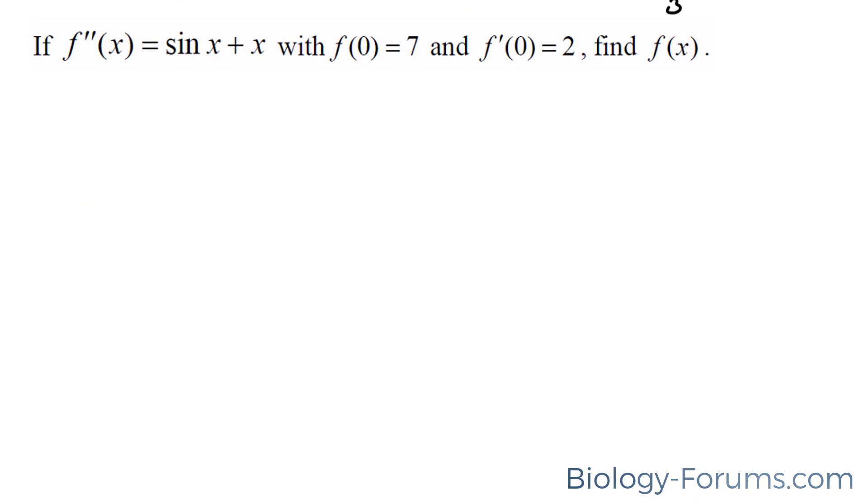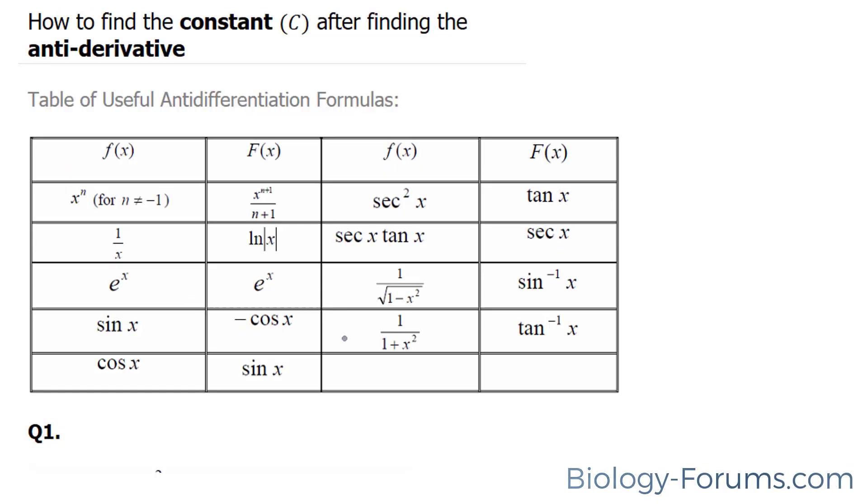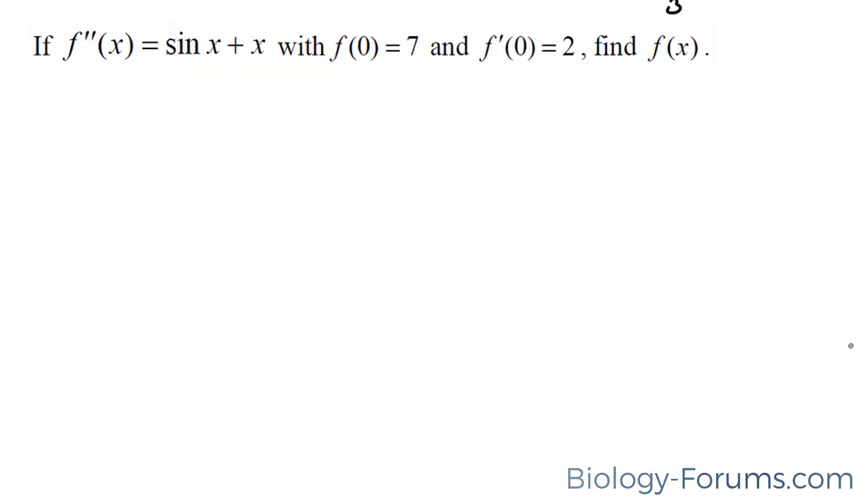The final question is slightly more complicated than the previous two. Here they give us the second derivative, and this time we have sine x. Now we're going to use our table here, and we know that sine x becomes negative cosine x. So let's start off by finding the first antiderivative. f double prime of x is equal to sine x plus x.